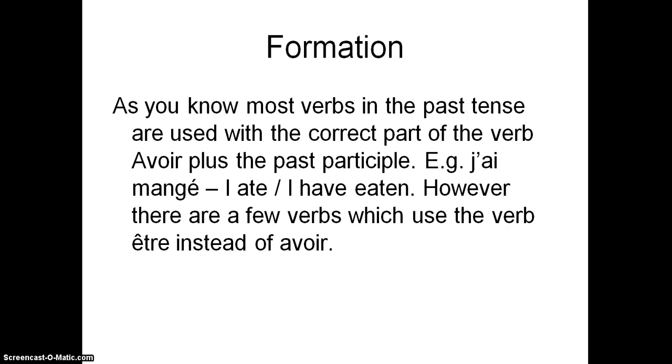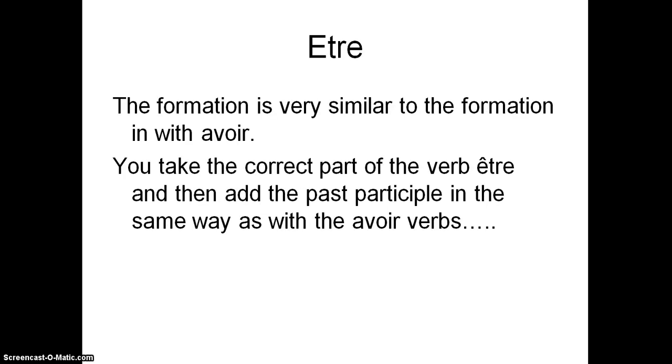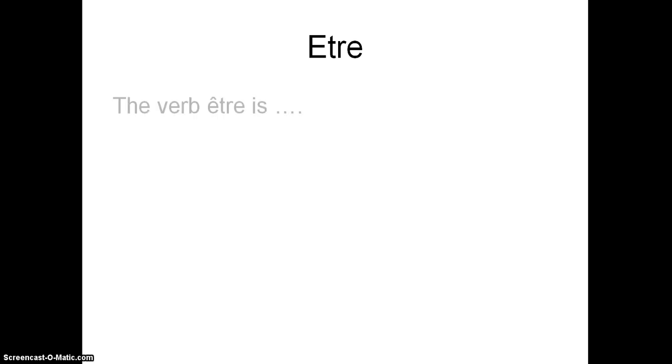Let's move on. So we said that most of them use avoir, past participle. But there are a few verbs which use être instead of avoir in the middle there. Now être, we know, means to be, but in this tense we wouldn't translate it as that. So let's have a look at some examples. So we take the correct part of être. So the verb être, can you remember how it goes?